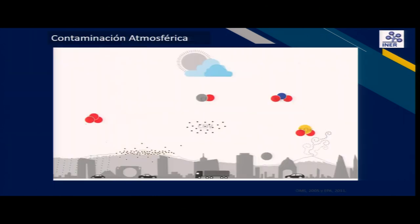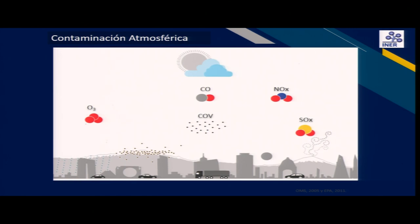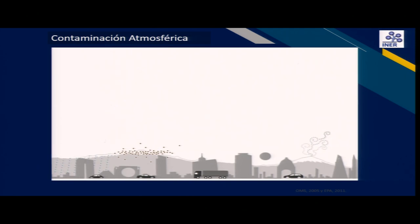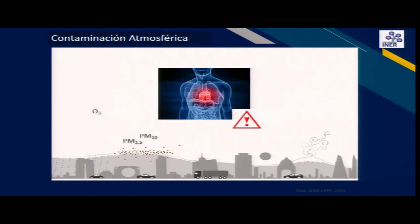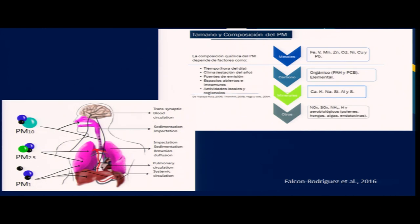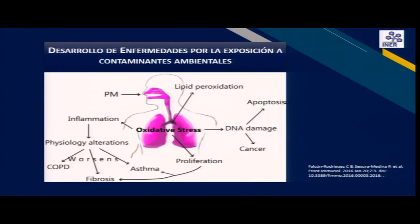Los efectos en la salud de los contaminantes dependerán del tiempo de exposición, las mezclas y la susceptibilidad de quien los respira. En la Ciudad de México se miden minuto a minuto los contaminantes criterio, siendo el ozono y el material particulado los de mayor preocupación, ya que continuamente desde los años noventa han sobrepasado la norma mexicana de calidad del aire. El material particulado está formado de gran cantidad de componentes tanto orgánicos como inorgánicos, y su tamaño determina hasta dónde pasan a nuestras vías aéreas.